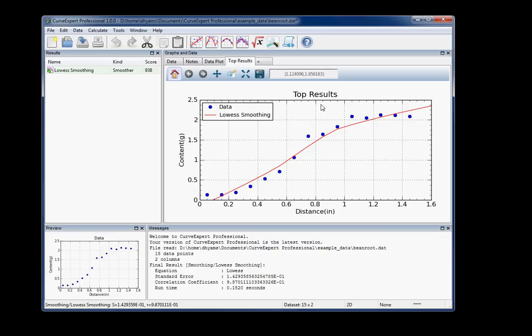In this Graphs and Data pane over here, you can see that a graph has been created on your behalf with the lowest smoothing on it, as would be expected. And just a quick explanation of the different areas of the CurveExpert window here, you have all of your results tabulated over here in the left-hand pane, in the Results pane.